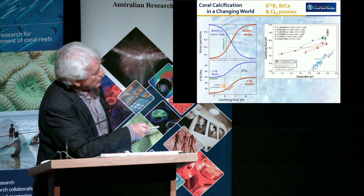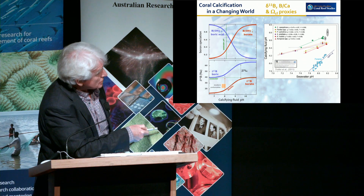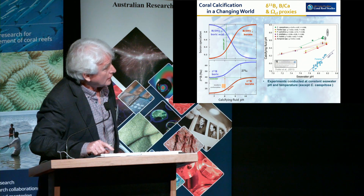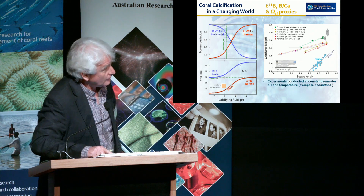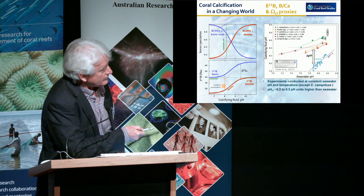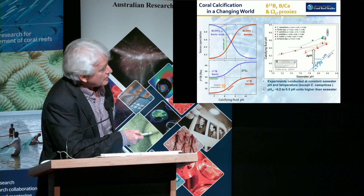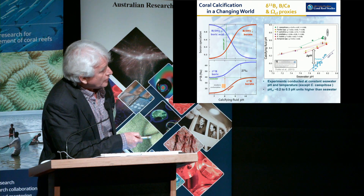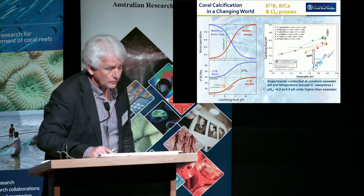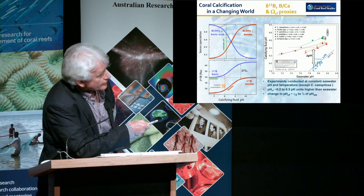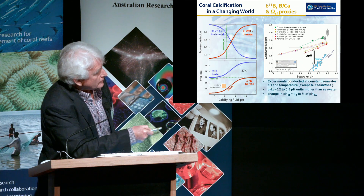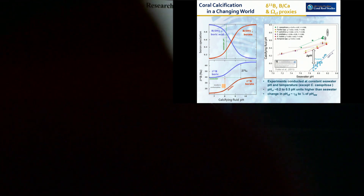This shows the response — this is data showing seawater pH and the pH of the calcifying fluid environment, done at constant temperature. There are quite nice relationships. The first thing we notice is that corals elevate their pH compared to seawater — that's those calcium ATPase pumps. They're about 0.2 to 0.5 pH units higher than seawater. And you notice the slope of the array as pH changes is different — this represents different types of calcifiers.